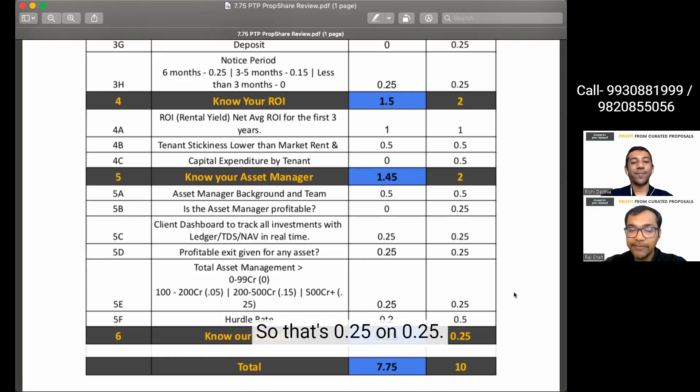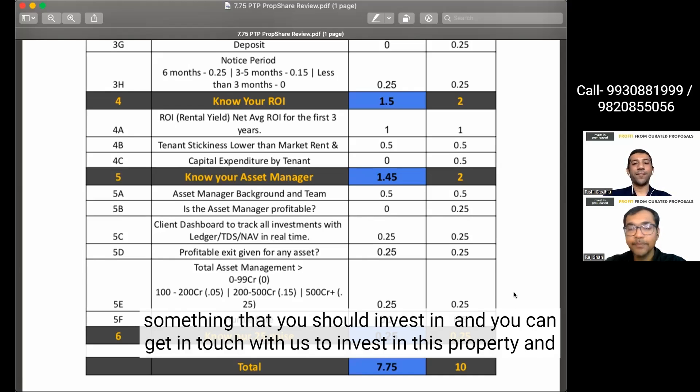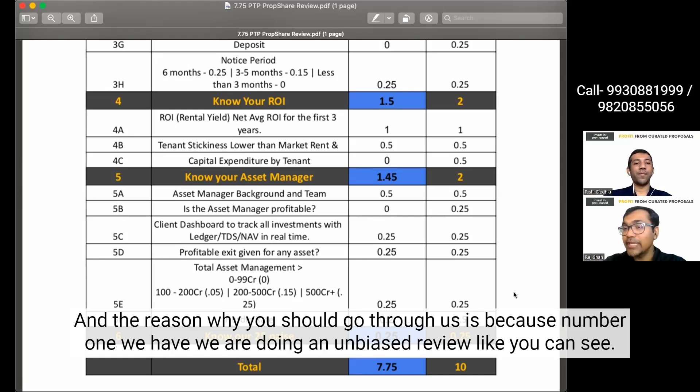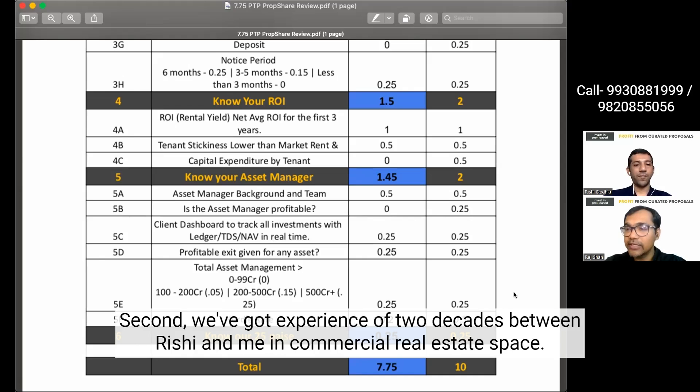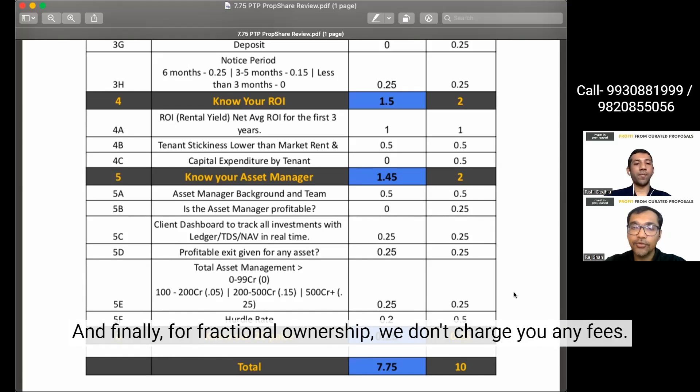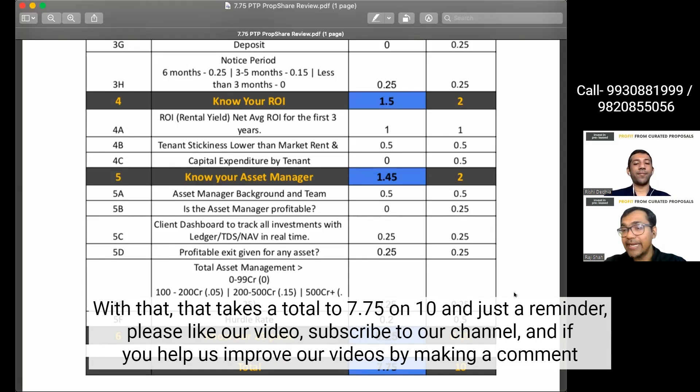Super. So that's 0.25 on 0.25. And since it's a sale and leaseback and all the points that Rishi mentioned, we believe that this is something that you should invest in. And you can get in touch with us to invest in this property. And the reason why we're doing this in-depth analysis is to help investors take an informed decision. And the reason why you should go through us is because number one, we are doing an unbiased review like you can see. Second, we've got experience of two decades between Rishi and me in commercial real estate space. We also do a lot of prelease fully owned deals. And we have experience in the prelease domain. And finally, for fractional ownership, we don't charge you any fees. So if you're looking at investing in this proposal and we have many other proposals as well, then we would request that you get in touch with us. With that, that takes our total to 7.75 on 10.